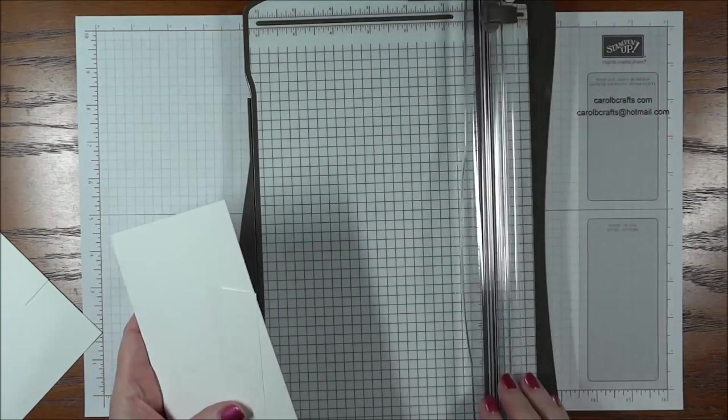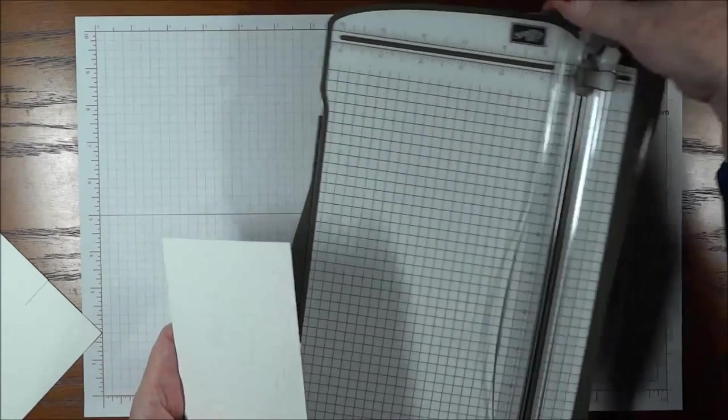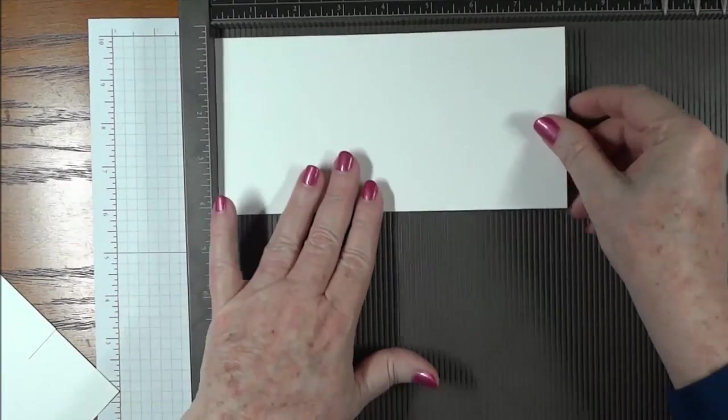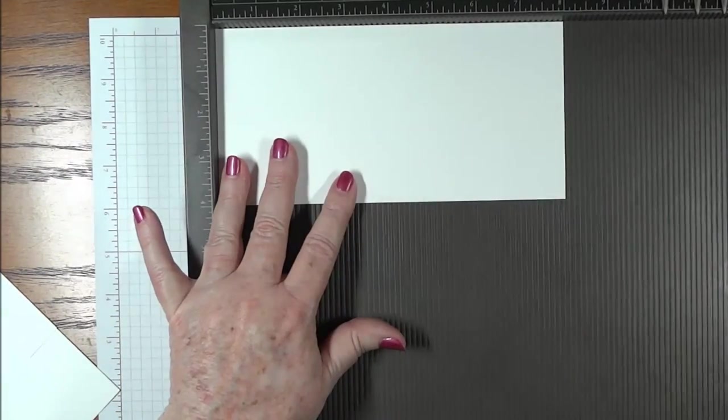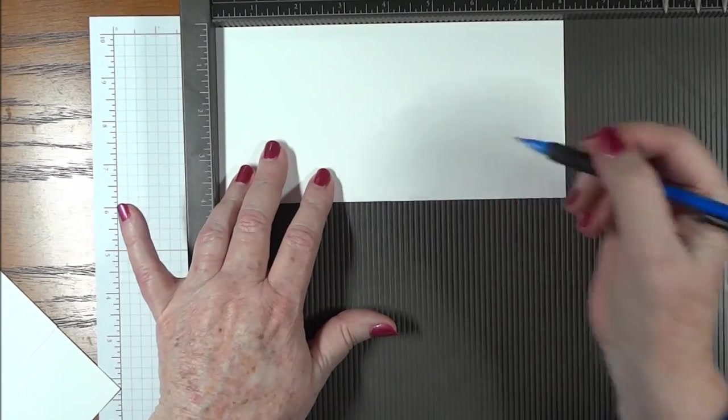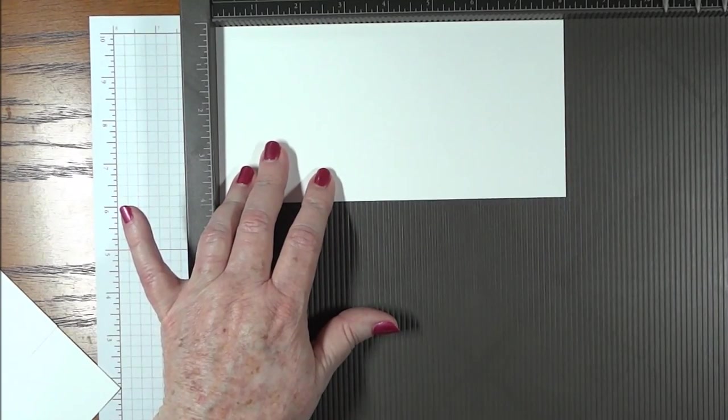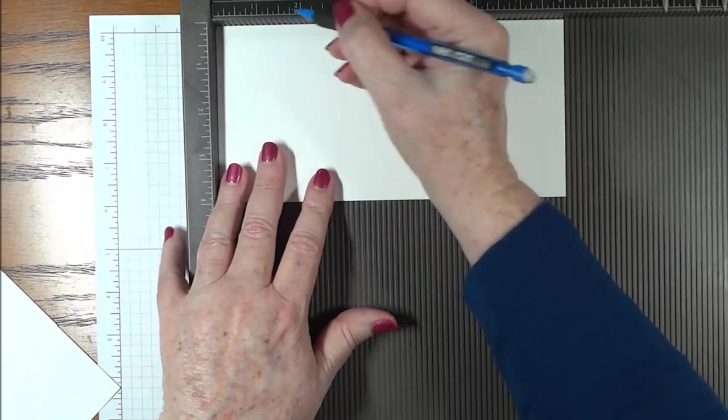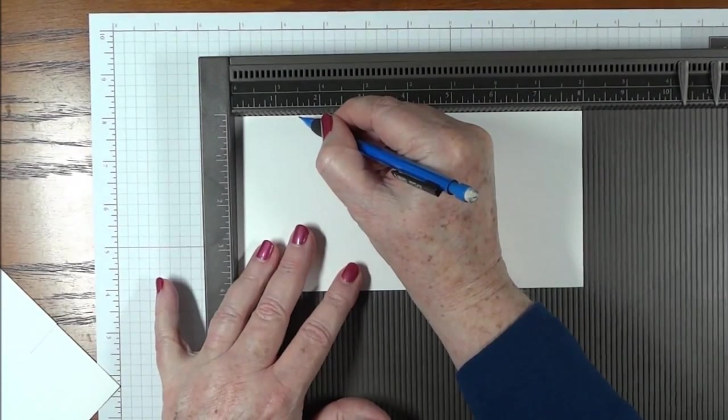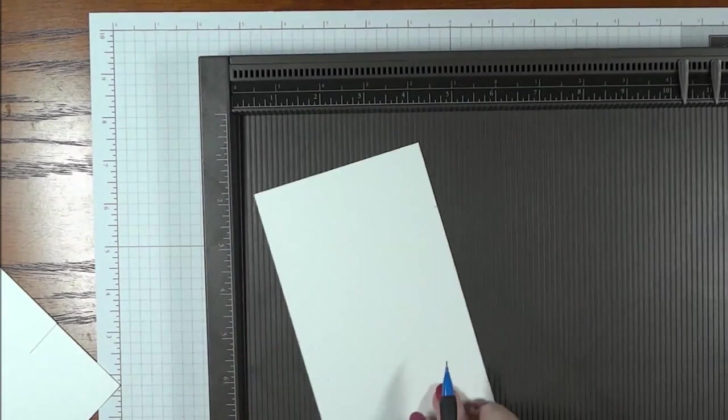And now we need our scoring board. We'll start with the larger piece, and it's going to be landscape. We'll take a pencil, and we're going to mark 1 1/2 inch with our pencil, turn it clockwise.